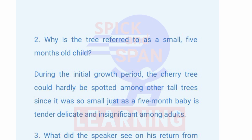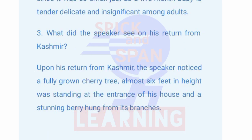Question 2: Why is the tree referred to as a small 5-month child? During the initial growth period, the cherry tree could hardly be spotted among other tall trees since it was so small, just as a 5-month baby is tender, delicate and insignificant among adults.